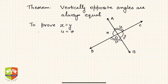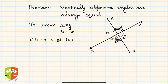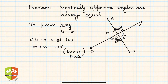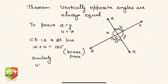To prove x equals y: CD is a straight line and OA is a ray on CD, so x plus u equals 180 degrees — the reason being linear pair. We studied this in the previous sessions: adjacent angles with non-common arms in opposite directions form a linear pair.